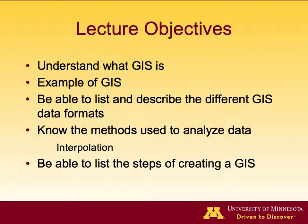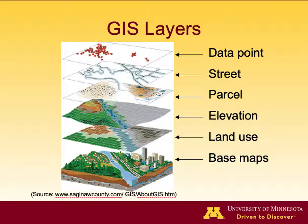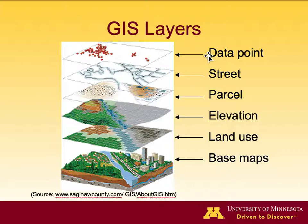We will also go over the analyzing method in GIS, which is interpolation, and you will be able to list the steps of creating a GIS. A typical GIS contains multiple layers: the base map of the area, a land use layer, an elevation layer, a parcel network layer, a street map, and the data point layer, which is usually from the user's own data and sits on top of all other layers.